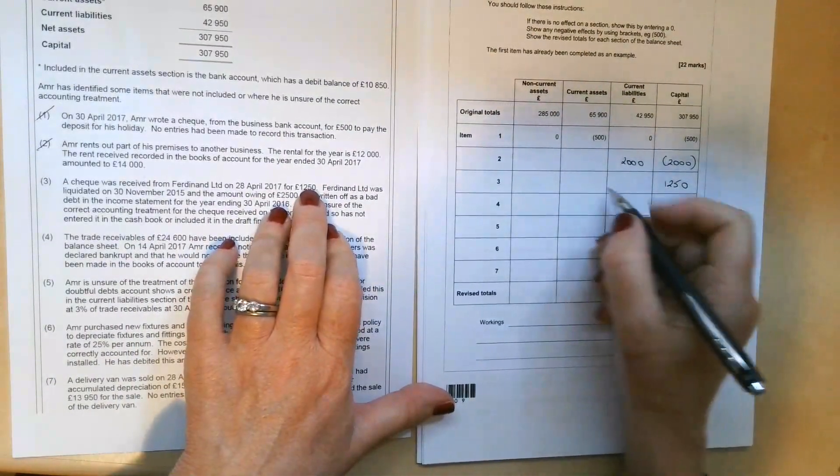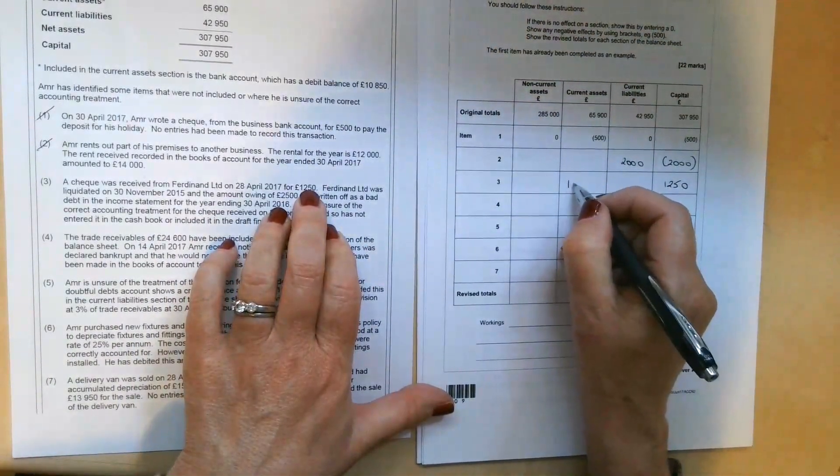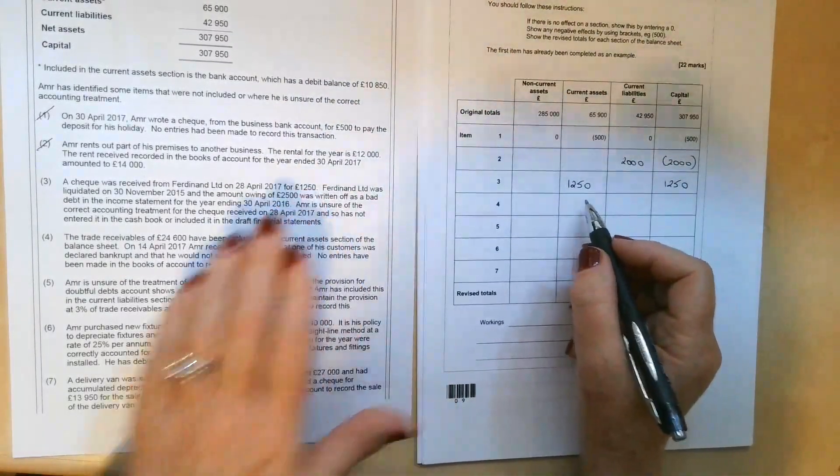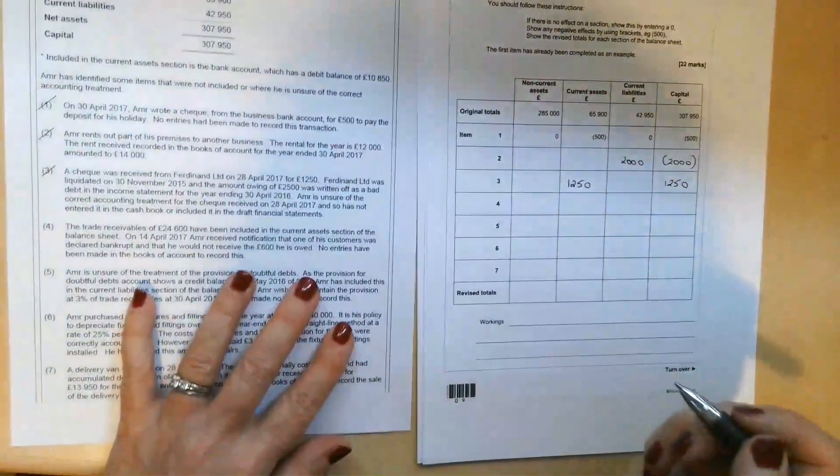And we've also got £1,250 going into the bank account, which if you remember, is sat under current assets. So that's that one dealt with.